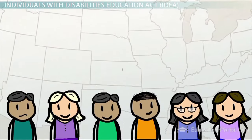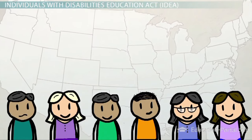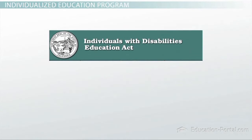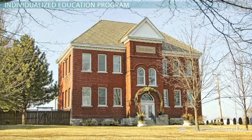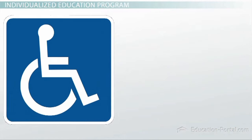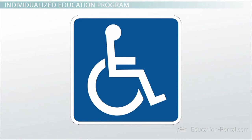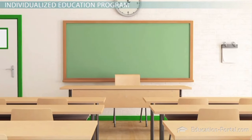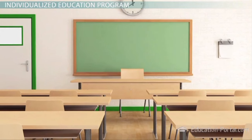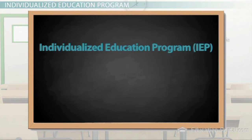In 2001, that was more than 6 million children. The IDEA requires that public schools provide specialized services to all children with disabilities from birth to age 21 for the purpose of granting equal access to education. A specific part of the law mandates public schools to create an Individualized Education Program, or IEP, for each student who is found to have an eligible disability.